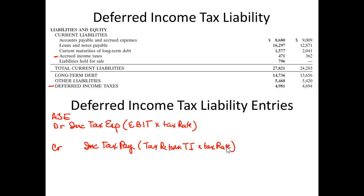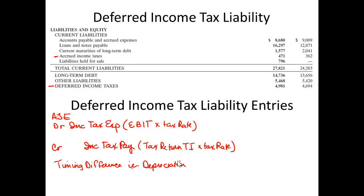The approach to doing your taxes is different than the approach to preparing financial statements. So there will be things called timing differences in the treatment of different items, such as depreciation. For tax purposes, we use the Modified Accelerated Cost Recovery System, or MACRS, whereas for our financial statements, we use straight-line, double declining balance, or units of production method for figuring out our depreciation.